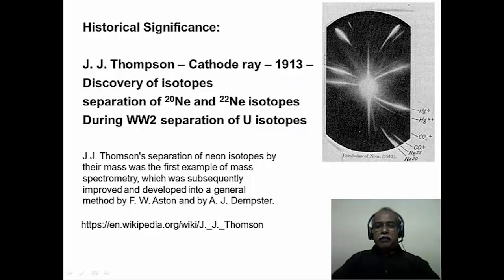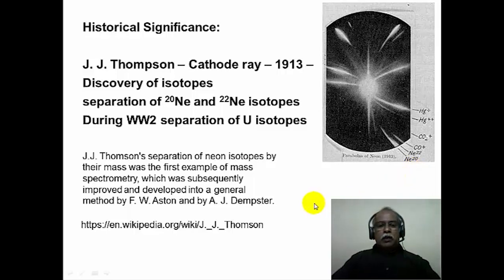This picture shows the photographic mass spectrum recorded by JJ Thomson. You can see two lines corresponding to Neon-22 and Neon-20, in addition to carbon monoxide, carbon dioxide, and peaks corresponding to Mercury-1 and Mercury-2. This experiment by JJ Thomson was probably the first ever experiment on mass spectrometry, in which Neon isotopes were separated based on their mass.